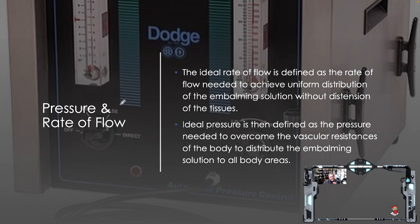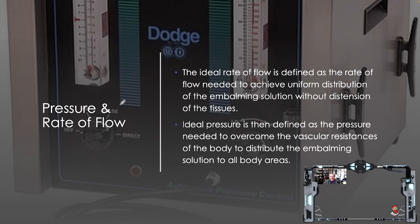Ideal pressure is defined as the pressure needed to overcome the vascular resistances of the body to distribute the embalming solution to all body areas. Rate of flow is how much comes in at a certain time; ideal pressure is how much push is required to make sure that happens.